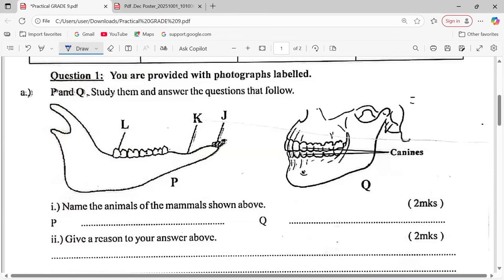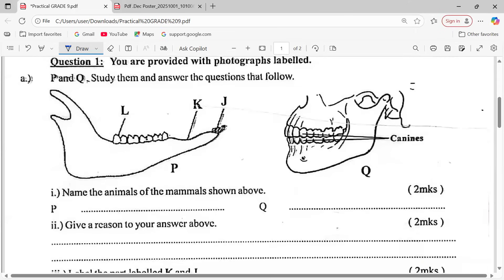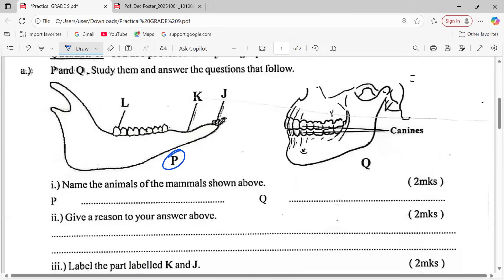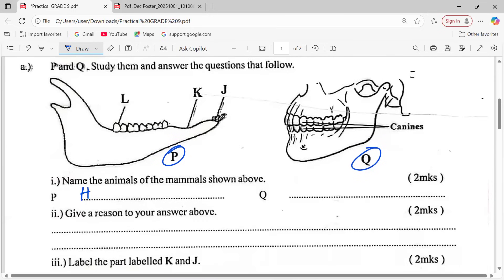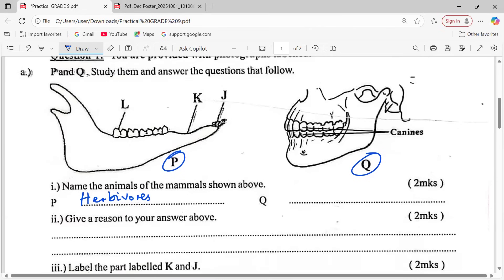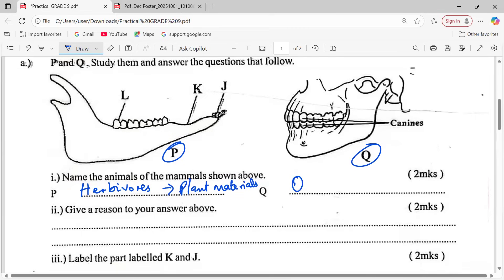Question one: You are provided with photographs labeled P and Q. Study them and answer the questions that follow. We can see P the diagram here, Q the diagram here. Name the animals of the mammals shown above. According to P, that's going to be herbivores. We call them herbivores. These are the mammals that feed on plant materials only. But when you look at Q, these ones we call them omnivores. This one now feeds on both plants and flesh.